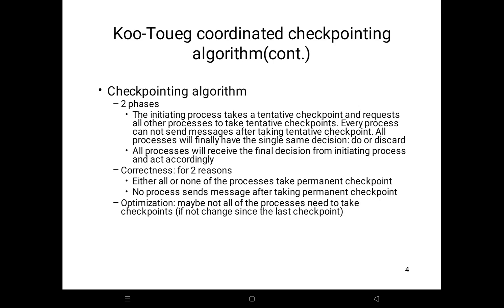Every process cannot send a message after taking the tentative checkpoint. All processes finally have a single decision — either do or discard. A process says no to the request if it fails to take a tentative checkpoint. If process Pi learns that all processes have successfully taken the tentative checkpoint, Pi decides that all tentative checkpoints should be made permanent; otherwise Pi decides that all tentative checkpoints should be discarded.